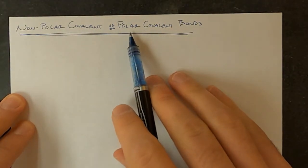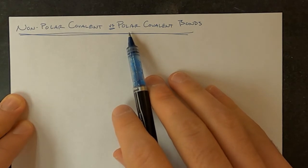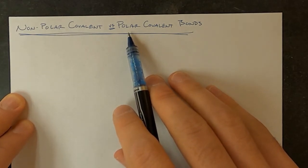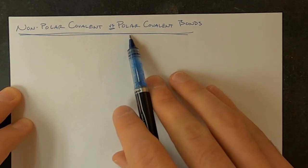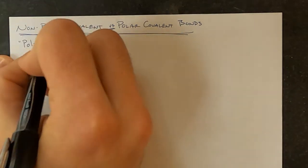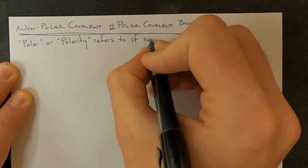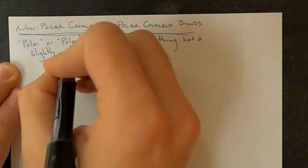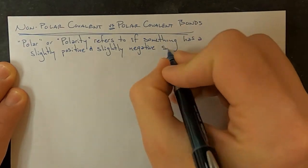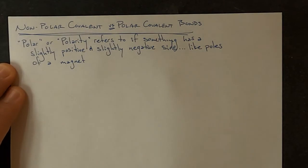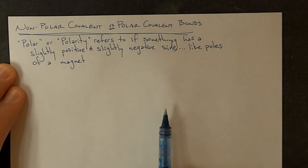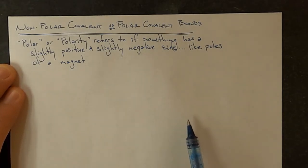In chemistry, the word polar refers to if something has a separation of charges where one side of that thing, whether it's a bond or molecule, has a small positive charge and one side has a small negative charge — polar meaning like poles of a magnet. This happens in bonds and in molecules. When electrons are not shared evenly between two atoms, it can have a slight negative where the electrons spend more time and a slight positive where the electrons spend less time.